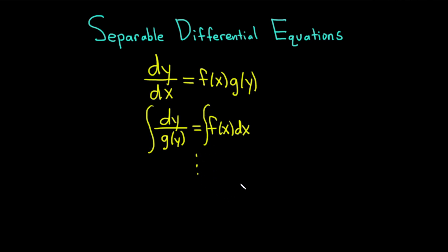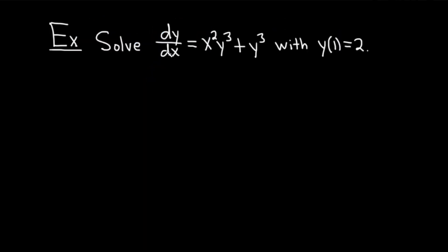Let's do an example. We'll solve dy/dx equals x squared y cubed plus y cubed, with y of 1 equals 2. We're going to solve the differential equation and then use the condition y of 1 equals 2 to find the value of C. This is called an initial value problem because we have a differential equation together with a condition called an initial condition.